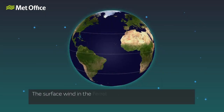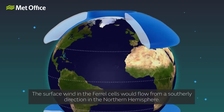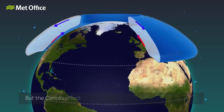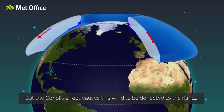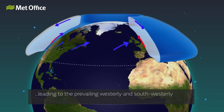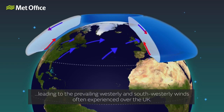The surface wind in the Ferrell cells would flow from a southerly direction in the northern hemisphere, but the Coriolis effect causes this wind to be deflected to the right, leading to the prevailing westerly and southwesterly winds often experienced over the UK.